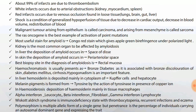Alpha interferon — leukocytes; beta interferon — fibroblasts; gamma interferon — lymphocytes. So: alpha in leukocytes, beta in fibroblasts, gamma in lymphocytes.